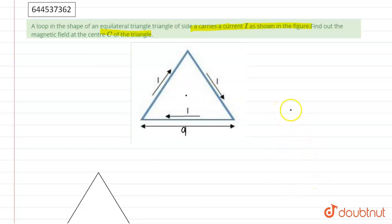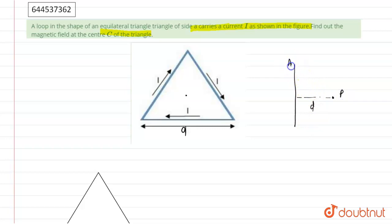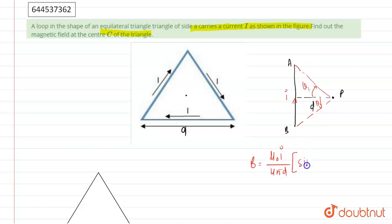As we know, the magnetic field due to a finite-length wire — assuming a wire of finite length where the perpendicular distance to point P is D, one end makes angle θ₁ and the other end makes angle θ₂ — the magnetic field at that point is B = μ₀I / (4πD) × (sinθ₁ + sinθ₂).